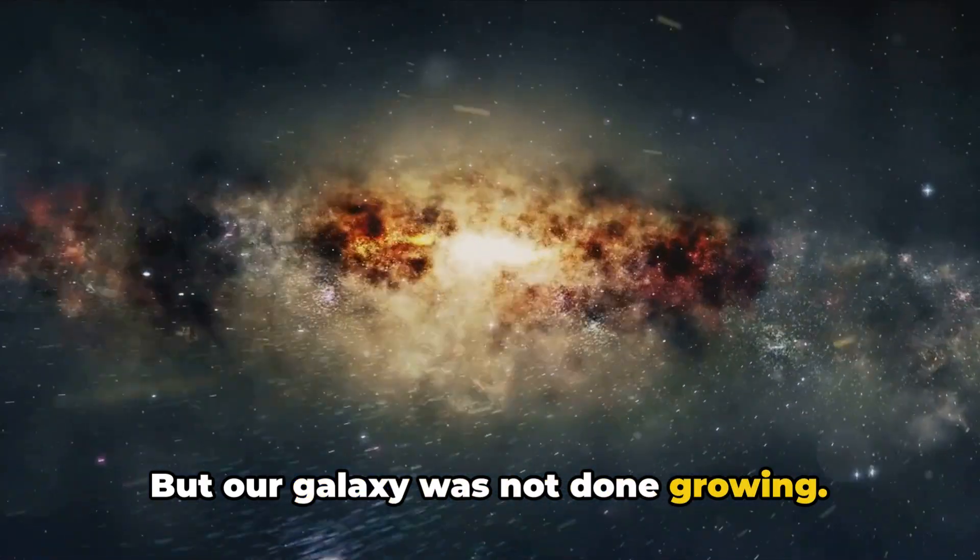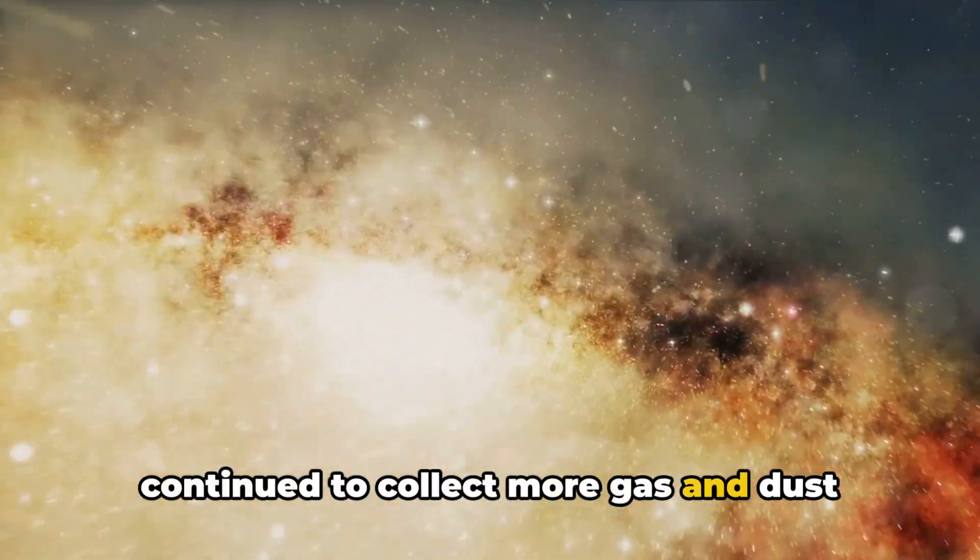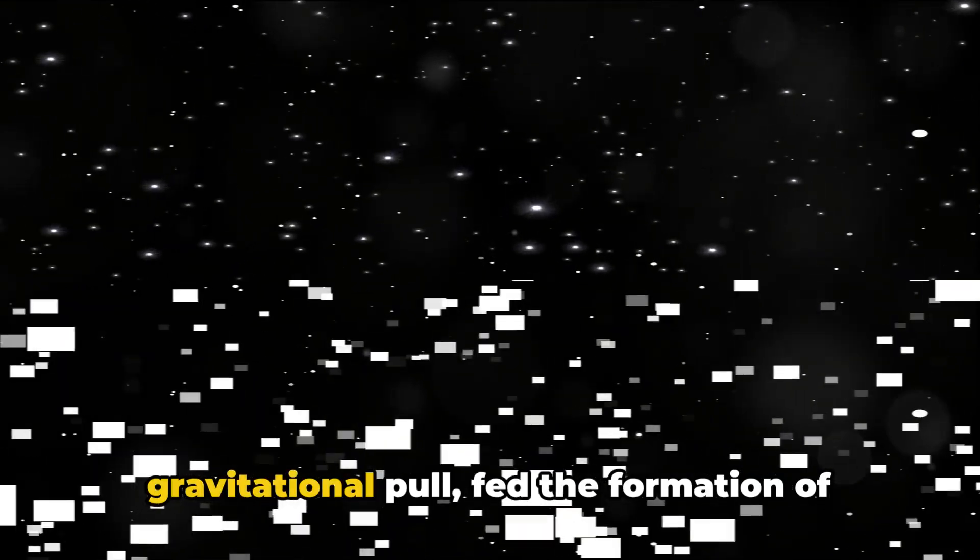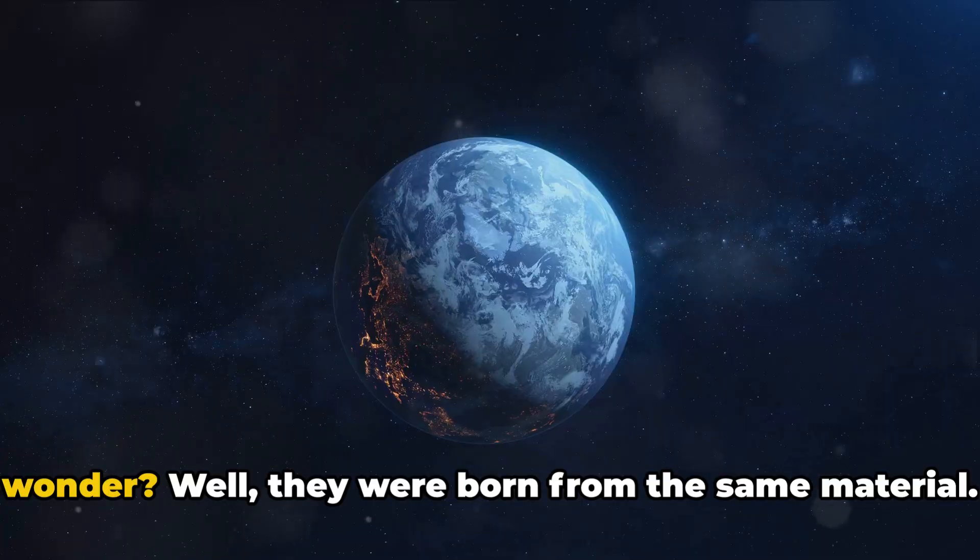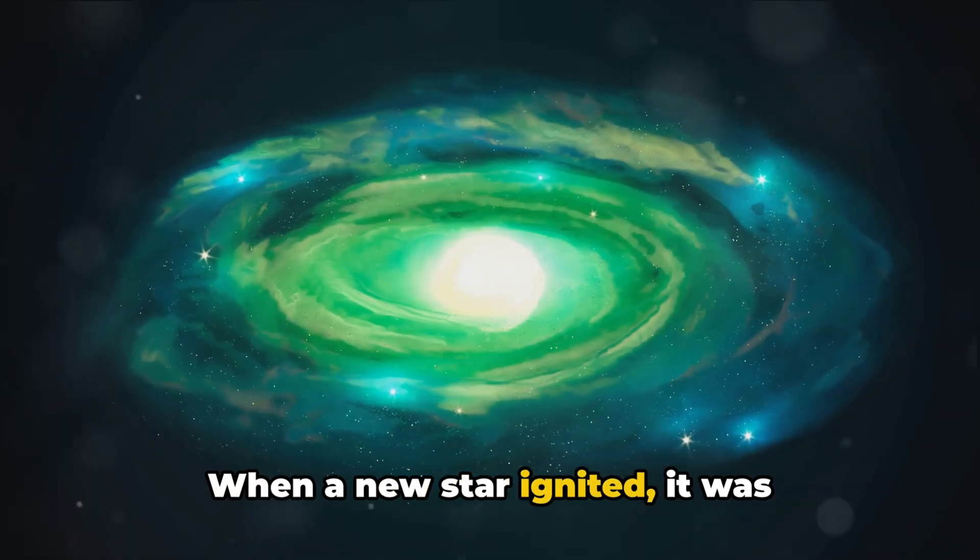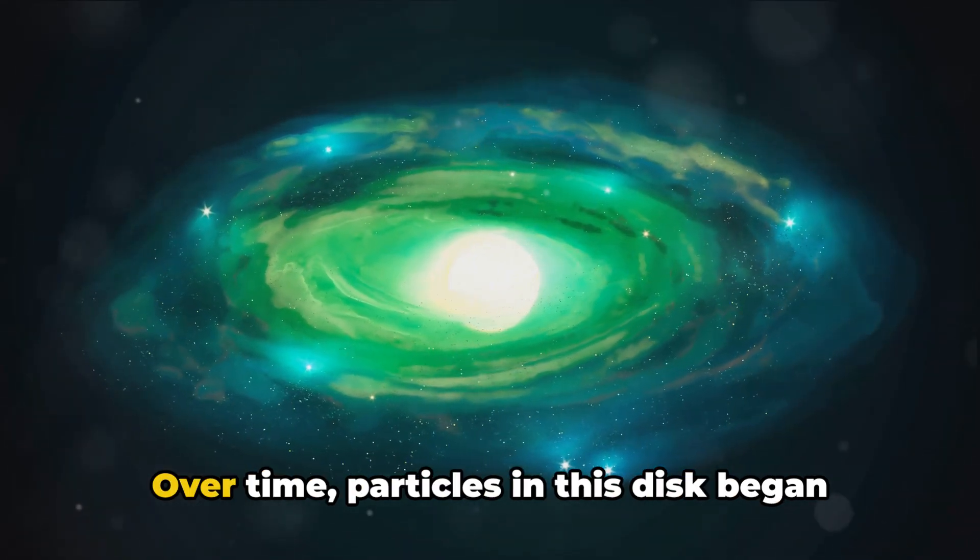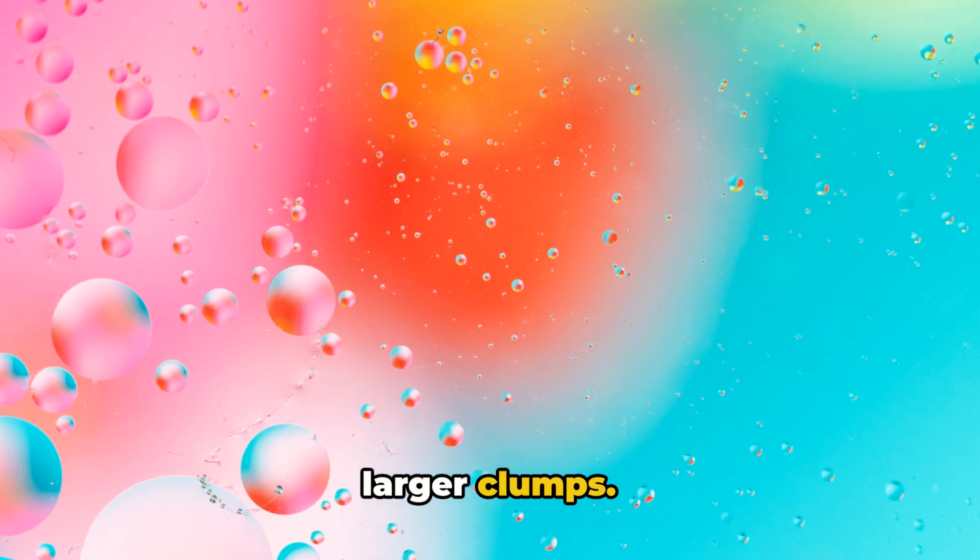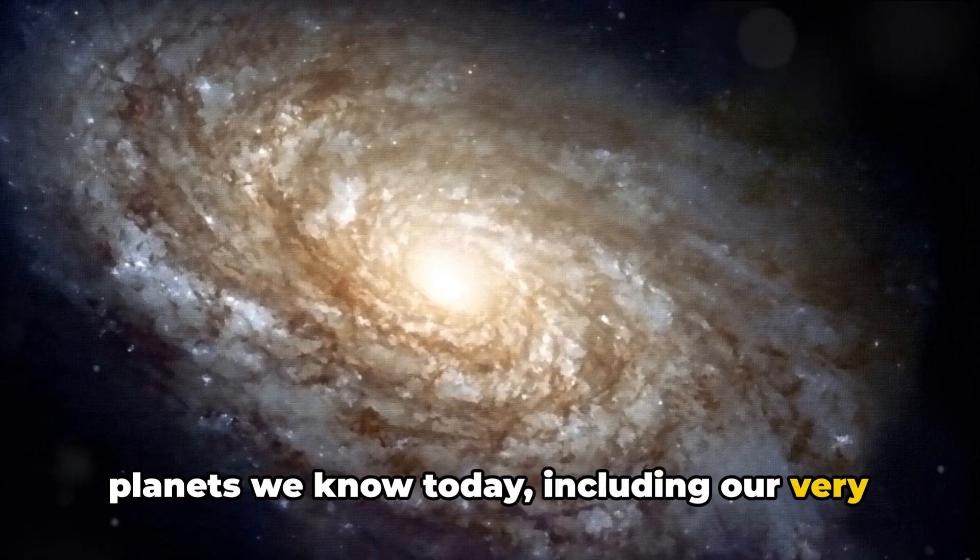But our galaxy was not done growing. Over billions of years, the disk continued to collect more gas and dust from its surroundings. This material, drawn in by the galaxy's gravitational pull, fed the formation of new stars. And what about the planets, you might wonder? Well, they were born from the same material. When a new star ignited, it was surrounded by a spinning disk of dust and gas. Over time, particles in this disk began to stick together, forming larger and larger clumps. These clumps eventually grew into the planets we know today, including our very own Earth.